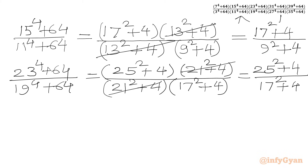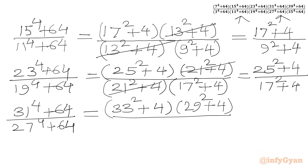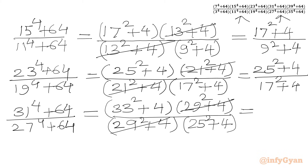The fourth ratio: 31⁴ + 64 over 27⁴ + 64. With a = 31: (31 + 2) = 33, so 33² + 4; (31 − 2) = 29, so 29² + 4 in the numerator. In the denominator with a = 27: (27 + 2) = 29, so 29² + 4; (27 − 2) = 25, so 25² + 4. We cancel (29² + 4), giving (33² + 4) over (25² + 4).